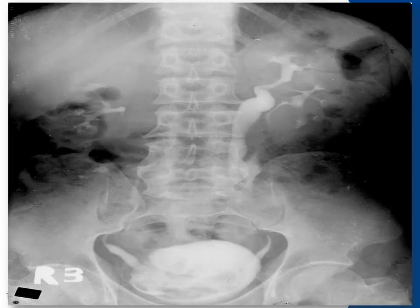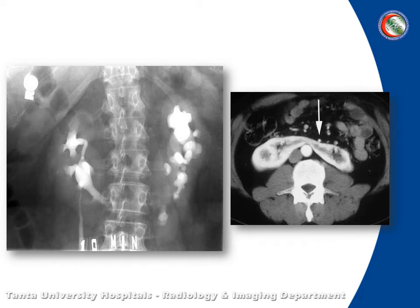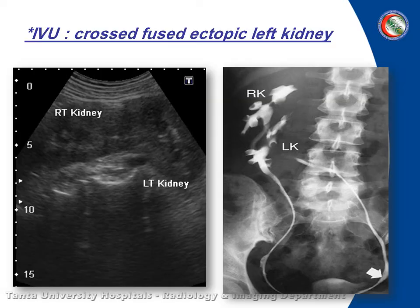As you can see here, there is unilateral duplication with dilatation of the upper moiety. Horseshoe kidney — as you can see, horseshoe kidney on contrast study and CT. Crossed fused ectopic left kidney.